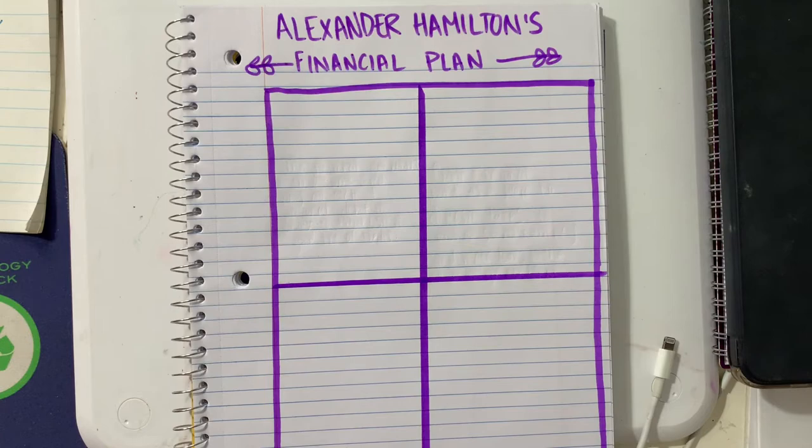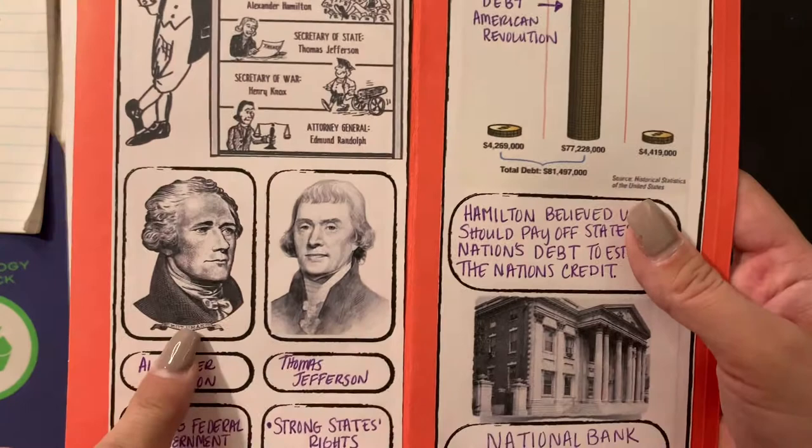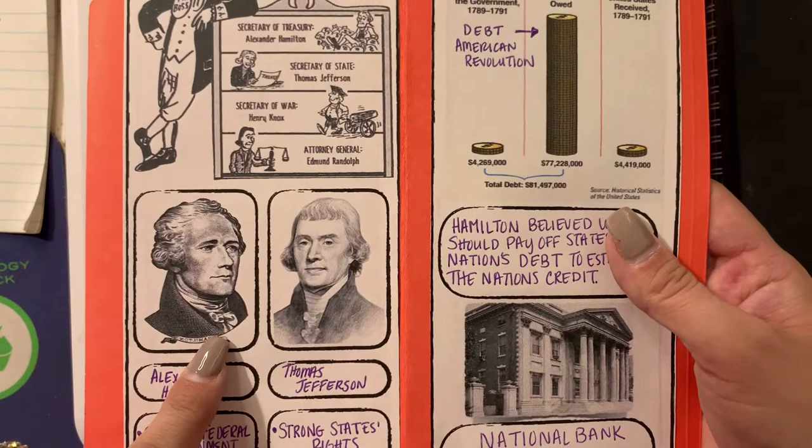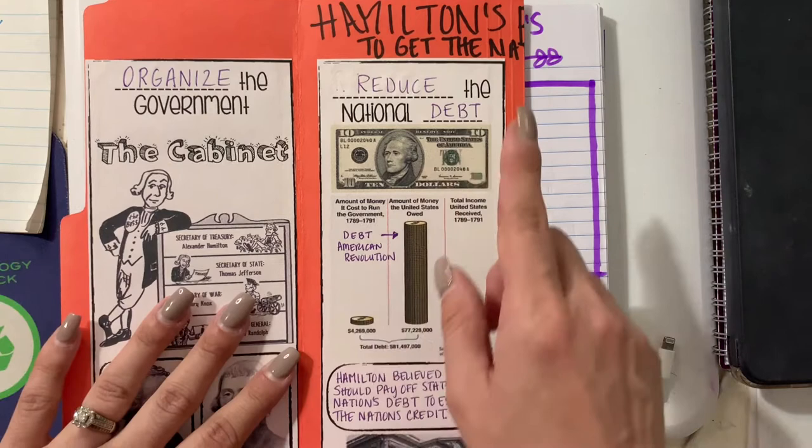Now that Washington is president, he has appointed a cabinet. Within this cabinet he has the Secretary of State, which is Thomas Jefferson, who will be dealing with foreign affairs. Then we have Alexander Hamilton, whose job is to be Secretary of Treasury, and the biggest thing he has to deal with is reducing the national debt incurred because of the American Revolution.